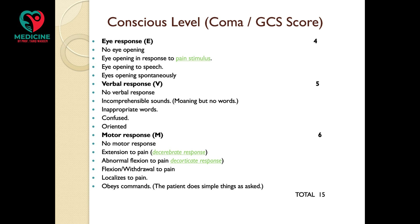In motor responses, no movement at all is scored one. Extension of limbs in response to pain is scored two. Flexion of limbs in response to pain or pin prick is scored three. Withdrawal is scored four. Localizing is scored five. Following a command is scored six. The total possible score is 15, and a fully alert, oriented patient scores 15 out of 15.